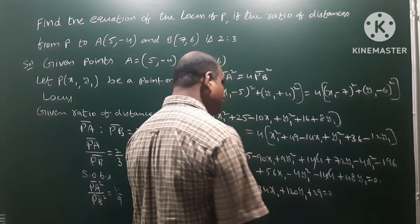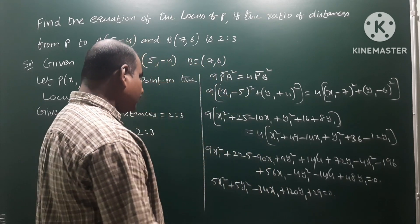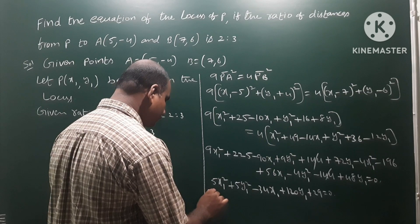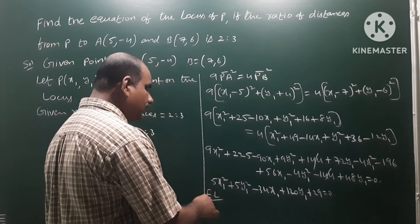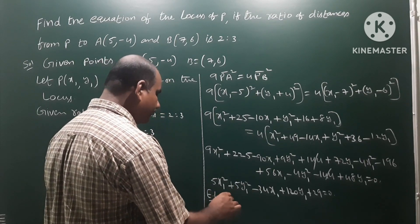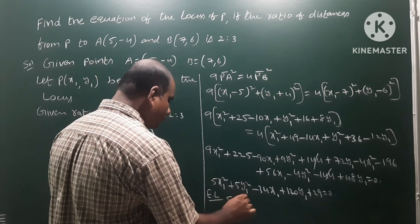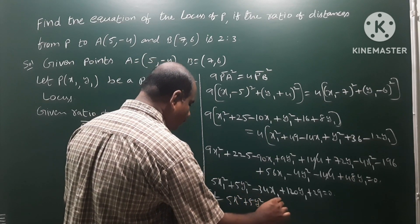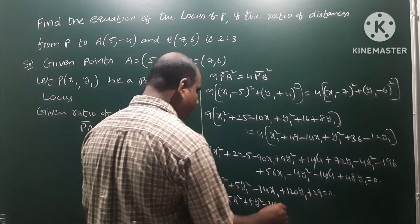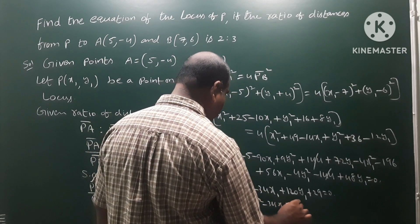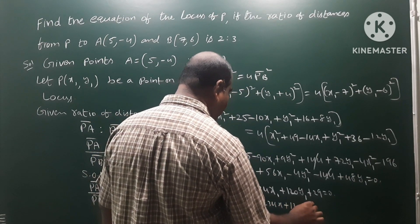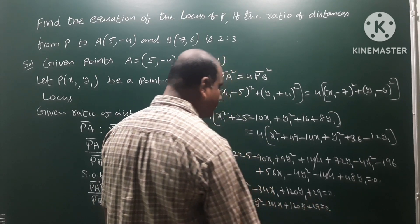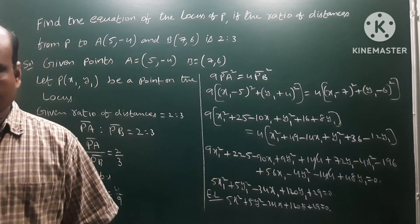Therefore, the equation of locus is: 5x square plus 5y square minus 34x plus 120y plus 29 is equal to 0. That is the answer.